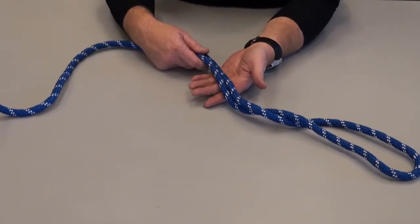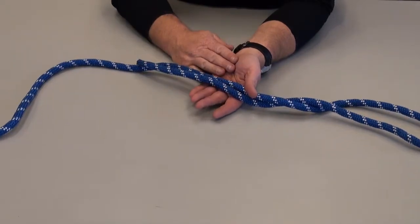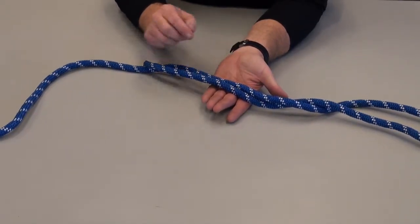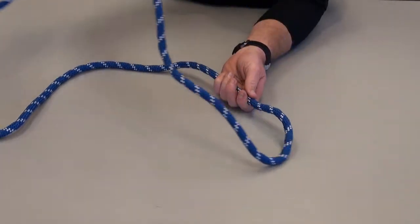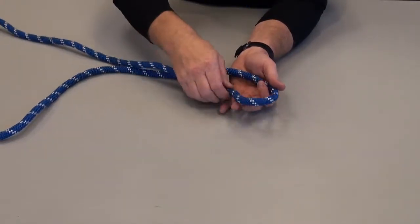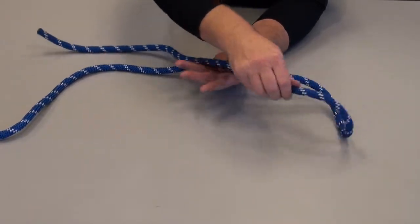To perform the figure eight on a bight, we're going to start with our position one. Instead of just running one section of rope over our palm, we're going to form a bight of rope and push that bight of rope over our palm.